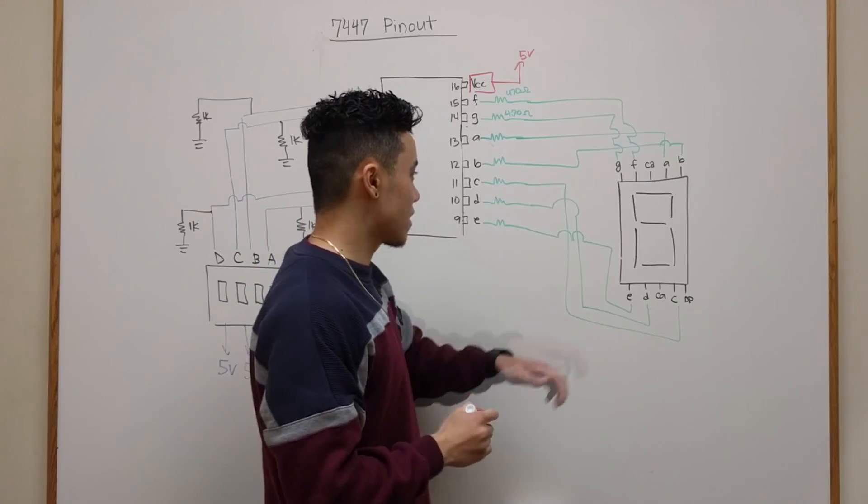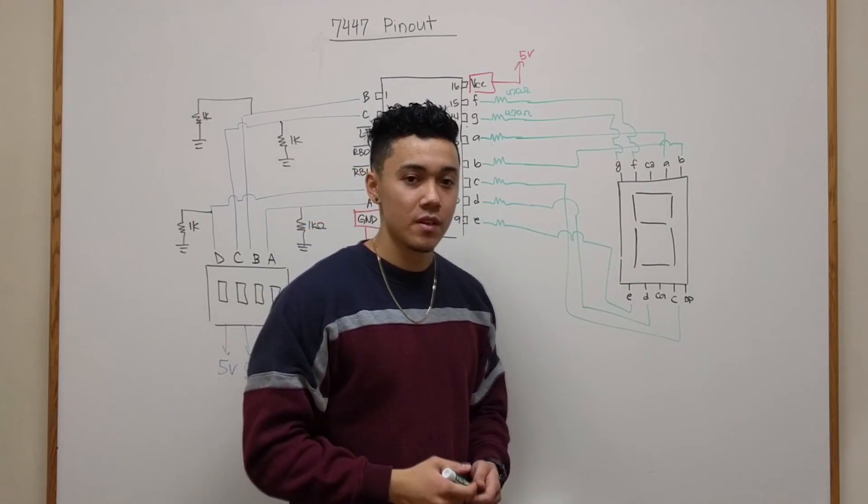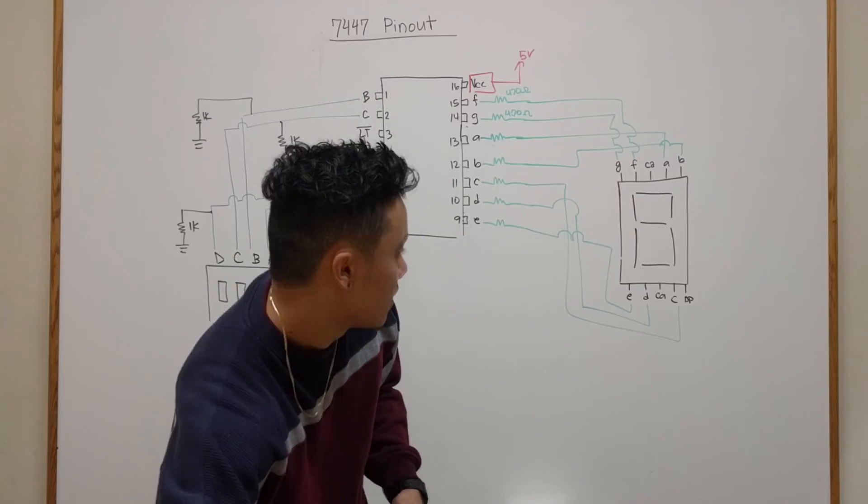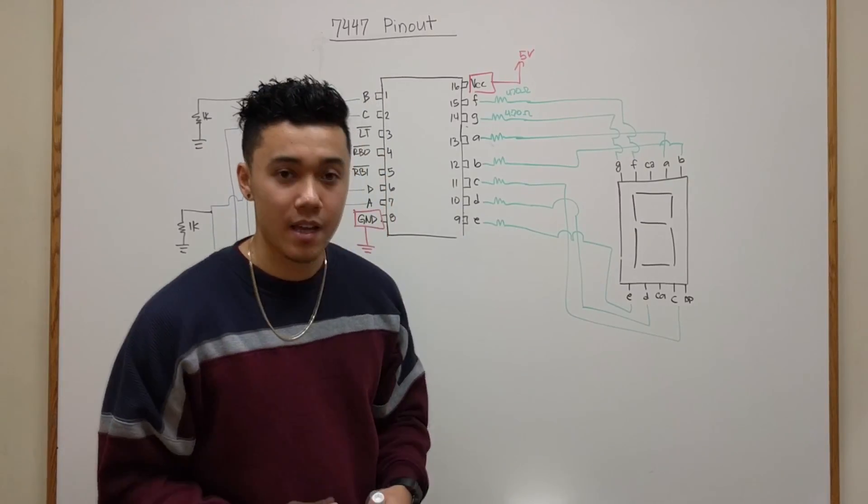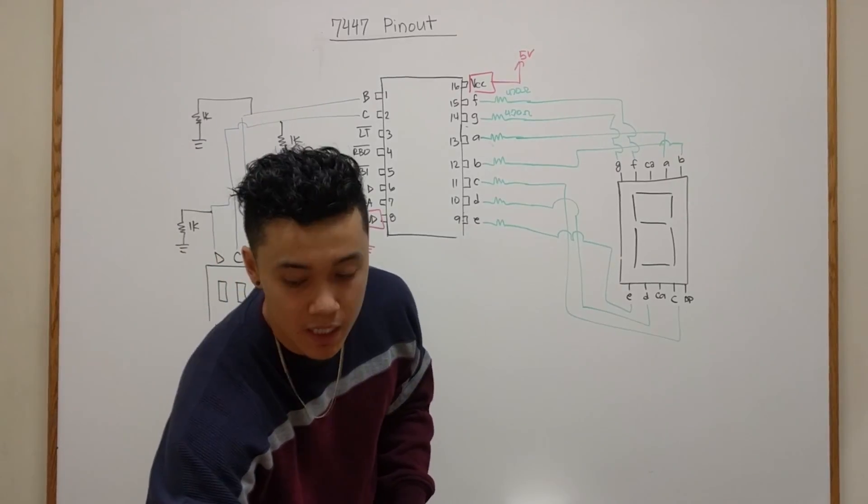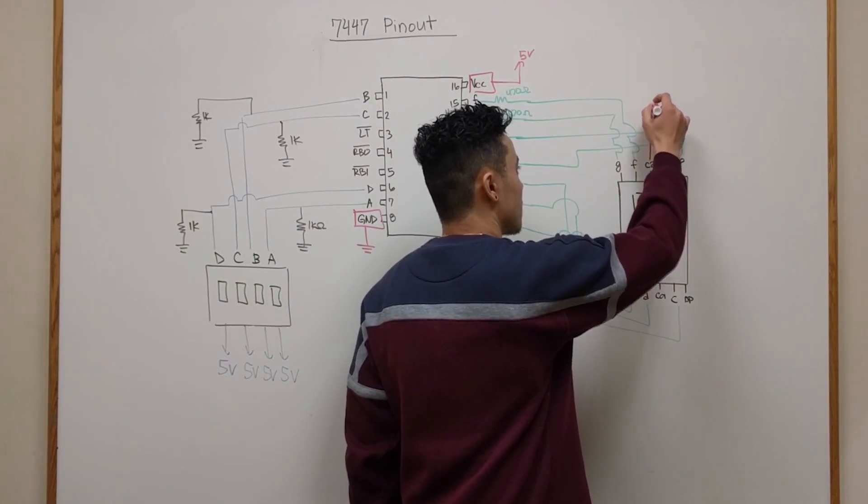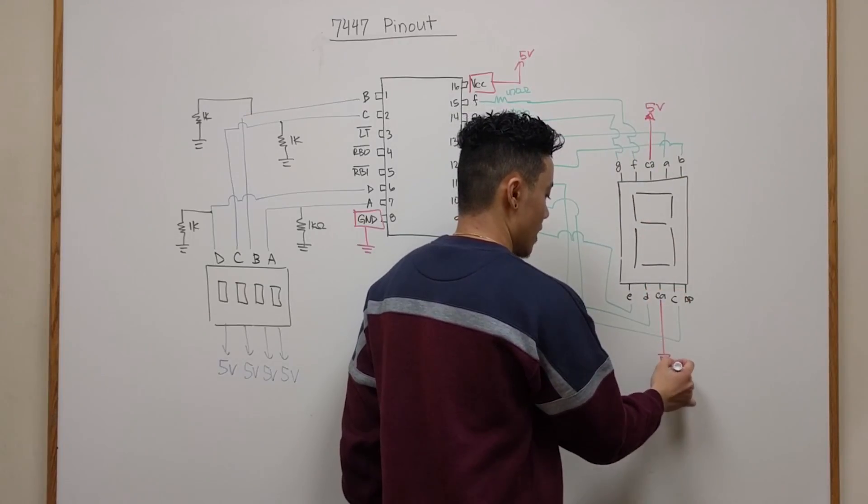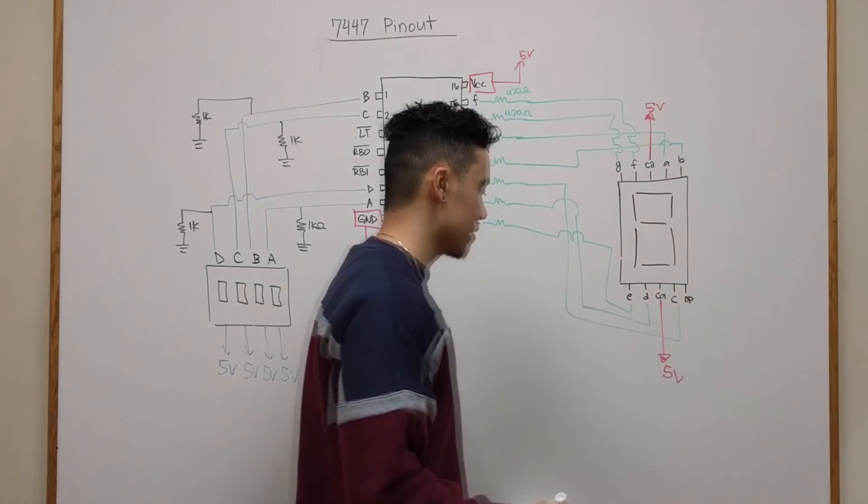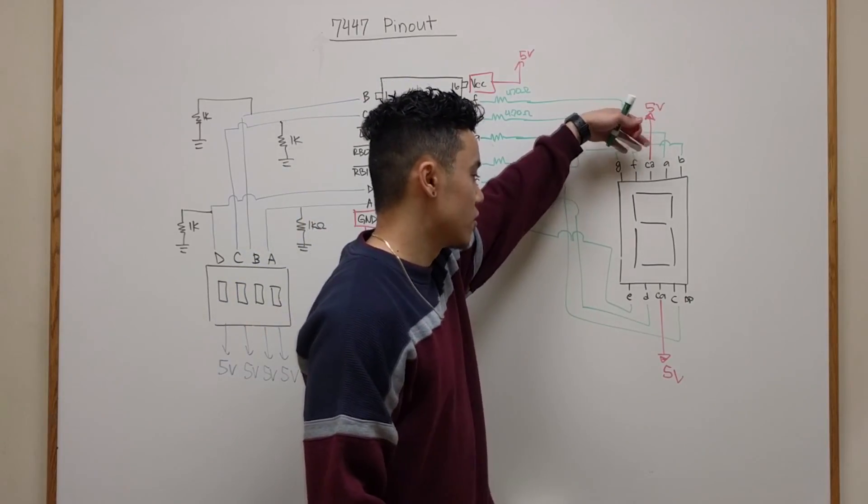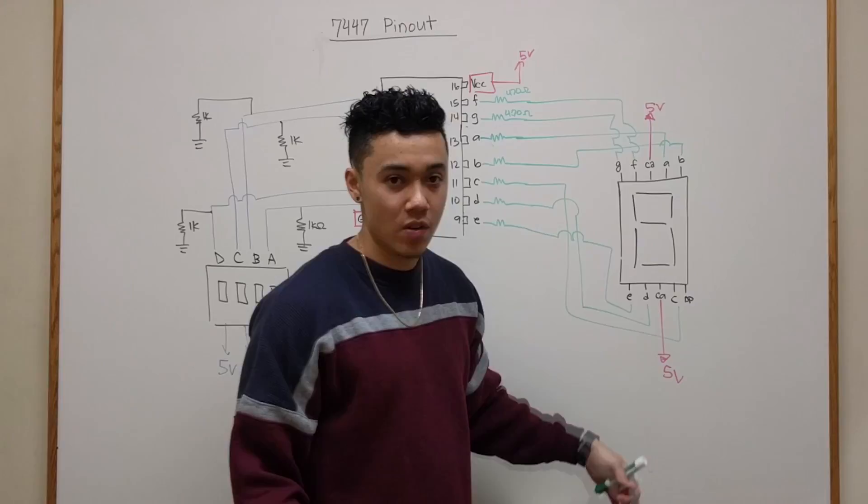Now the next one is your common anode or common cathode. If you have a common anode you'll connect it to power, which in my case I had a common anode 7 segment display, so these would go to our 5 volts. And if you have a common cathode 7 segment display, instead of connecting this to 5 volts you would just connect both of these to ground instead.